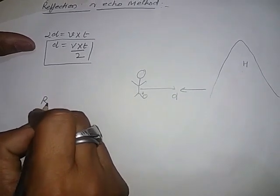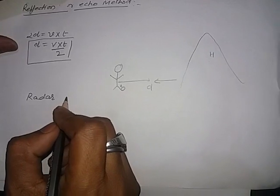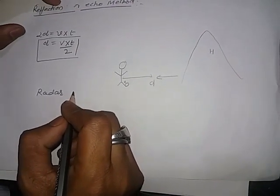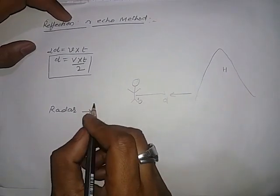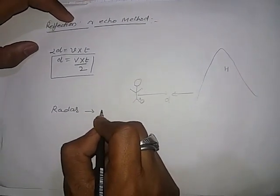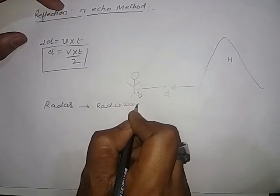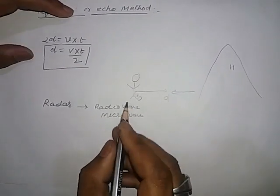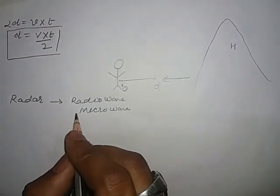Now radar and sonar both work on the principle of reflection of wave or echo method. In radar we use radio waves or microwave and it is used to detect flying objects.